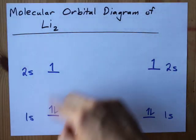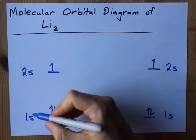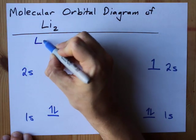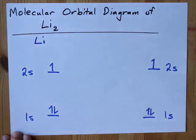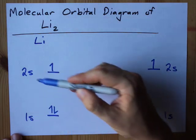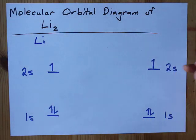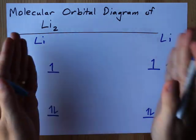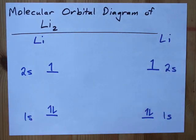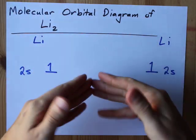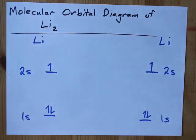Here I've got the electron configuration diagram for one lithium atom. It is three electrons: 1s², 2s¹. And I have another one over here. These two atoms are going to interact together, and the orbitals are going to overlap to create molecular orbitals.